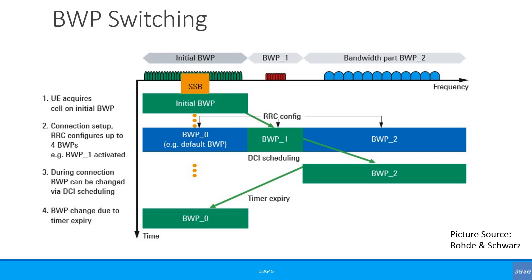This final slide shows a picture from Rohde & Schwarz explaining bandwidth part switching very nicely. The UE acquires the cell on the initial bandwidth part. The RRC Connection Setup or RRC Reconfiguration then configures up to four bandwidth parts and activates one of them. The bandwidth part can then be changed during operation using DCI. It should be noted that bandwidth part switching via DCI scheduling is a very fast mechanism for adapting various QoS requirements to the physical layer, but it is optional for the UE.